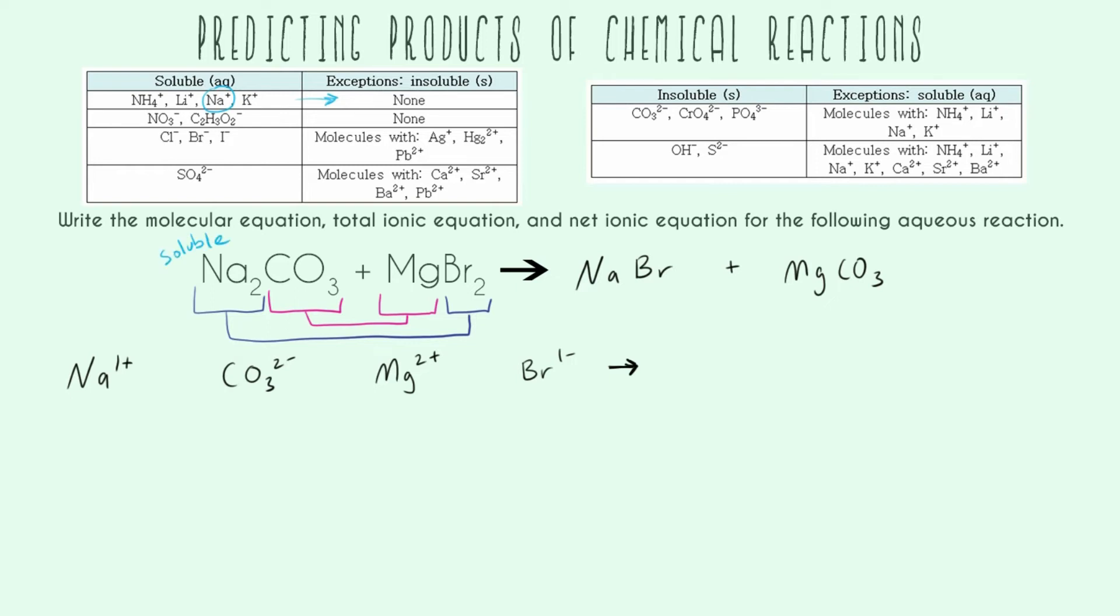And then looking at MgBr2, we see our Br minus. We look at our exceptions. There is no magnesium there, which means that MgBr2 is also going to be soluble. So that's great. And that allows us to know that both of these are going to completely dissolve once we put them in water. So another way we can say that is saying that both of these are going to be aqueous. We can say AQ in parentheses. These are going to completely dissolve.